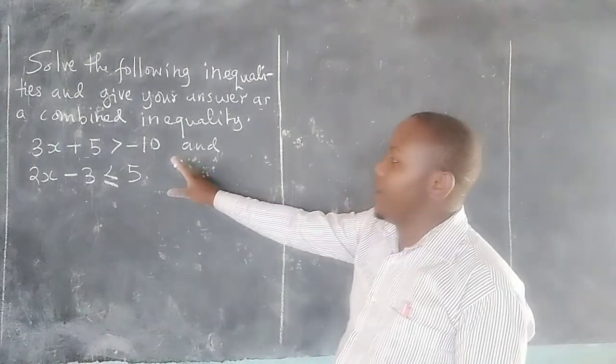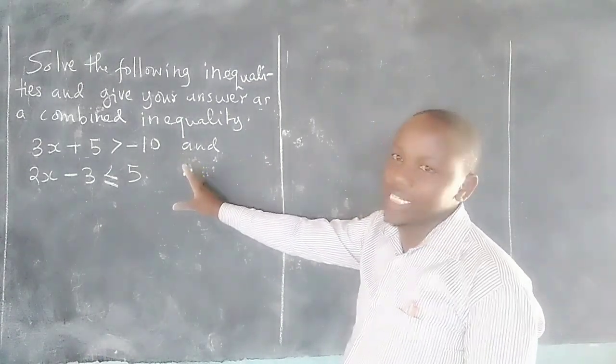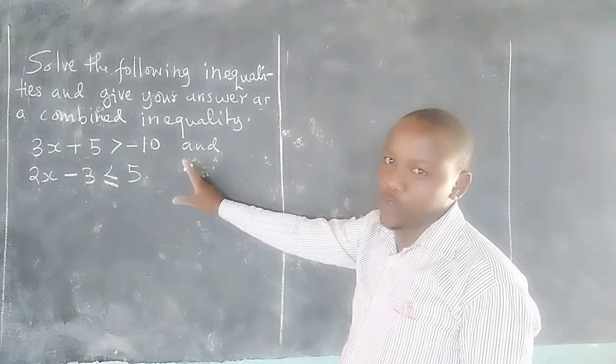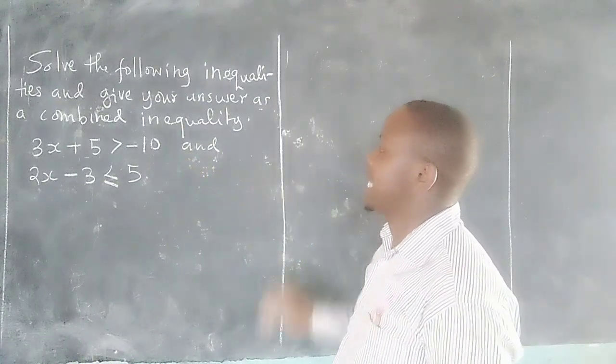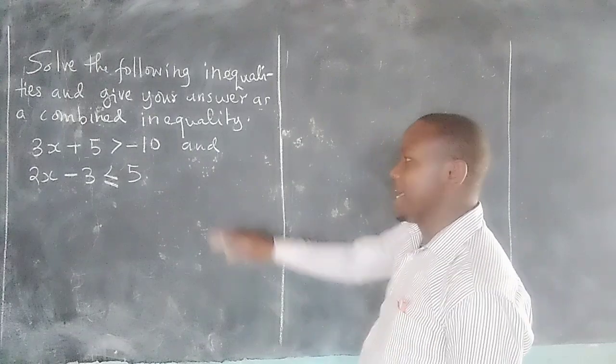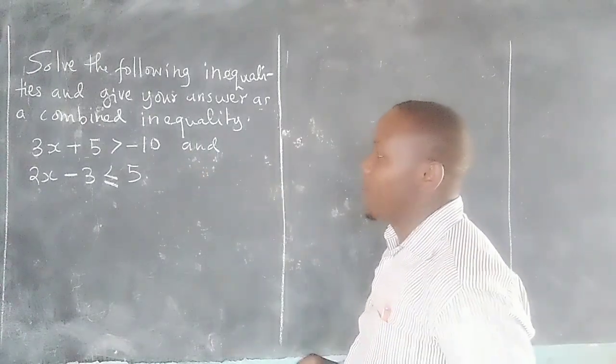Therefore we got a pair of simultaneous inequalities here whereby we are taught to solve and give the answer as a combined inequality. These are compound statements whereby we should make simple statements.